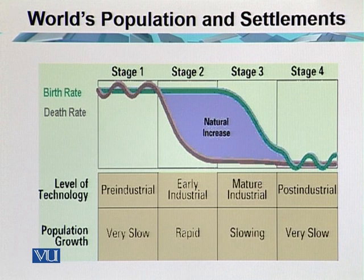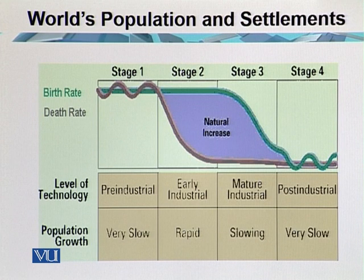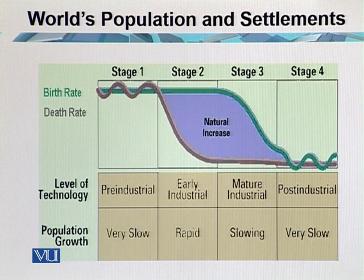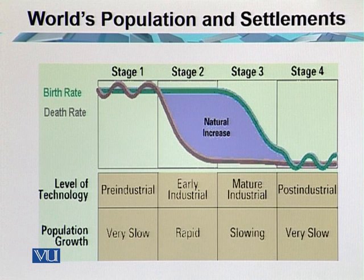Stage four is the post-industrial era, in which growth has slowed even further. We are passing through a post-industrial era nowadays. In this part of the world we have developed economies where population growth is closer to zero. In developing economies too, population growth has reduced — for example, India, China, and Pakistan, where growth is closer to 2.1% annual growth rate.